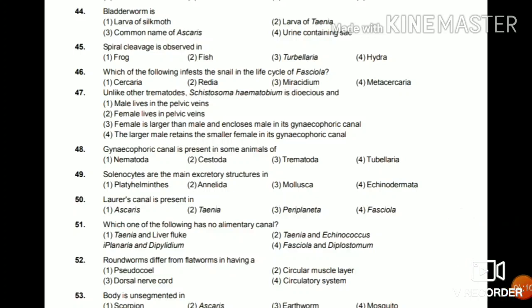Question 48: Gynecophoric canal is present in some animals of nematodes, cestodes, trematodes, or Turbellaria? The answer is trematodes — example: Schistosoma.